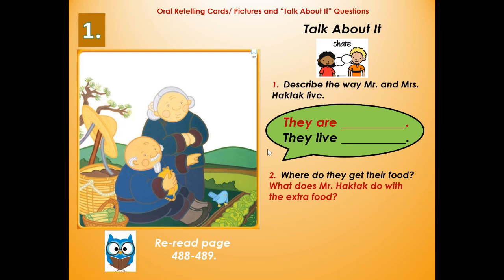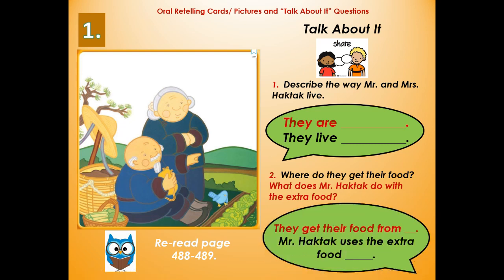Number two: where do they get their food, and what does Mr. Hacktack do with the extra food? You could say in a complete sentence, 'they get their food from...' and 'Mr. Hacktack uses the extra food...' If you look closely at this picture, they get their food from a garden, and Mr. Hacktack uses the extra food to take to the village and trade for clothes or oil.